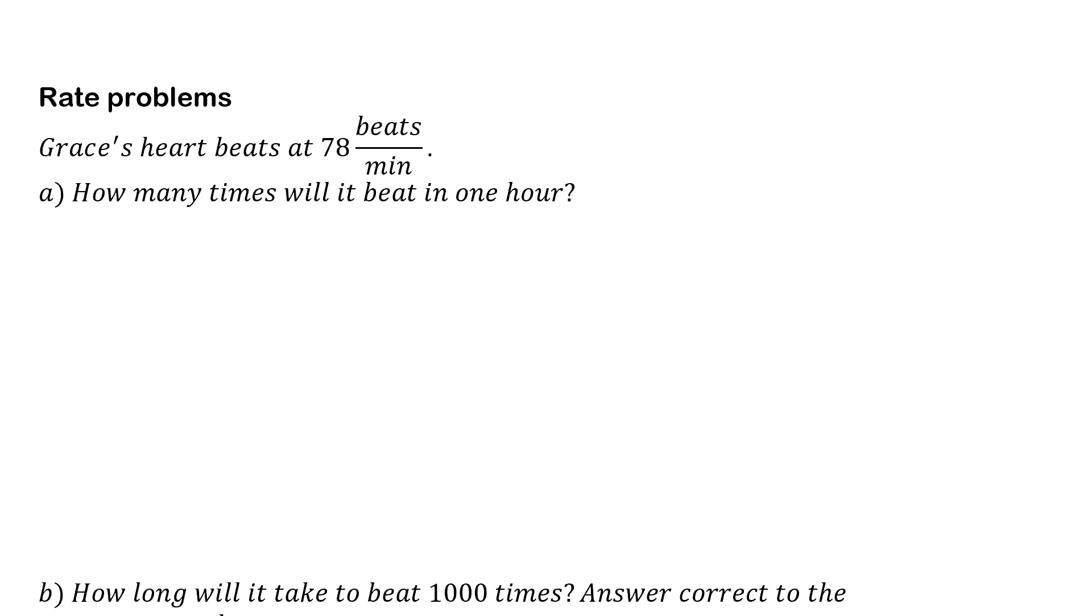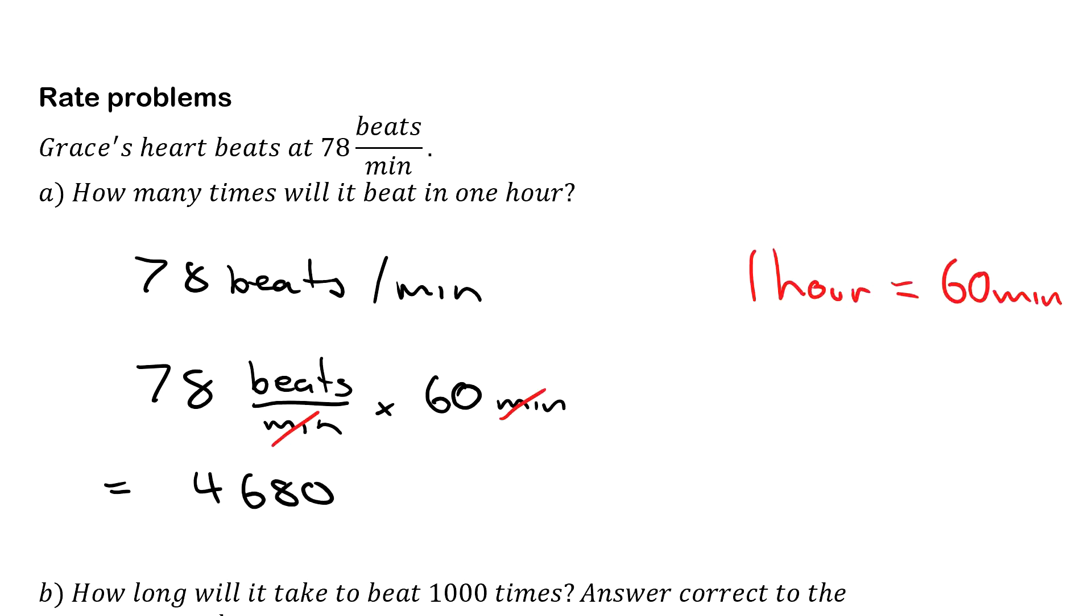Rate problems now. So Grace's heart beats at 78 beats per minute. How many times will it beat in one hour? So we have 78 beats per minute. We know that in one hour there is 60 minutes. I'll write this out a little bit different to normal: 78 beats per min times 60 min. Now, the reason I'm writing it like this is that crosses that out, so they cancel. And we get 78 times 60, which gets us 4,680. And the only units that are left that haven't been cancelled was beats, which is what we wanted. So in one hour, Grace's heart beats 4,680 beats.